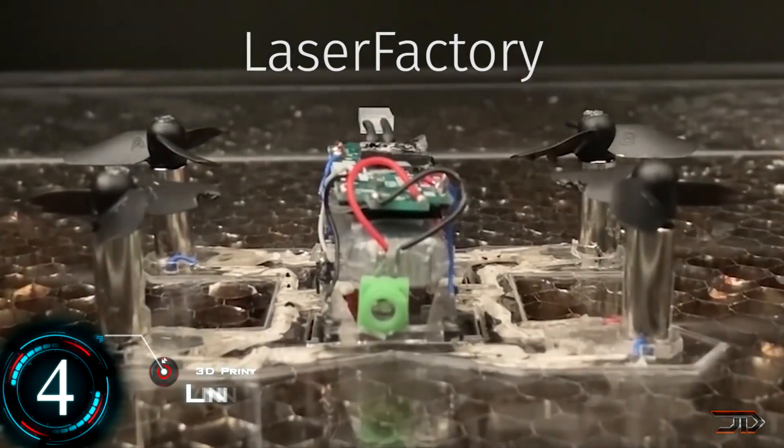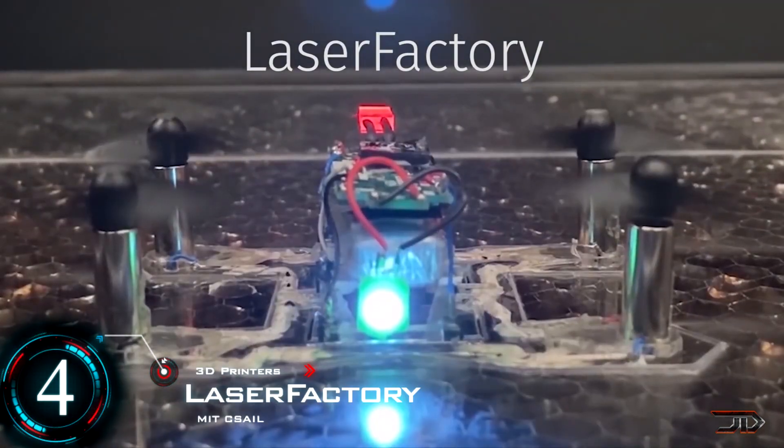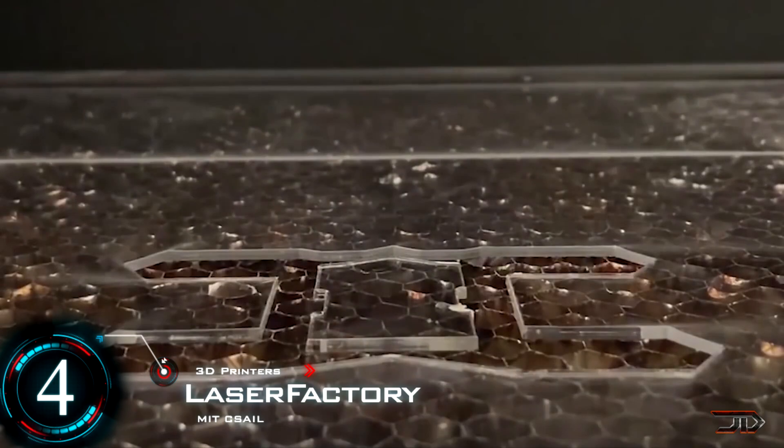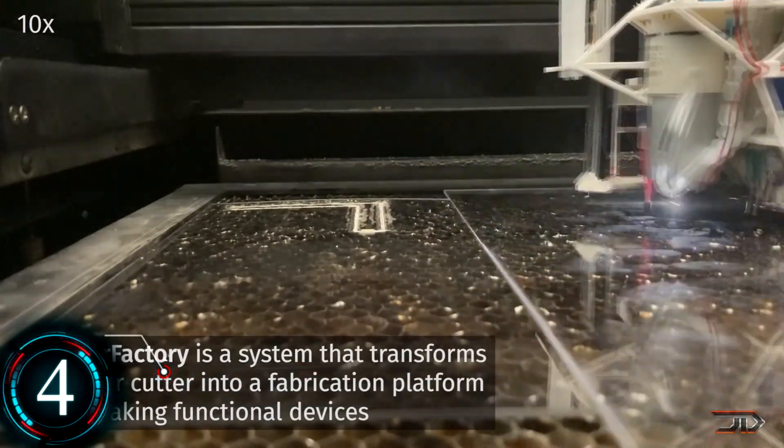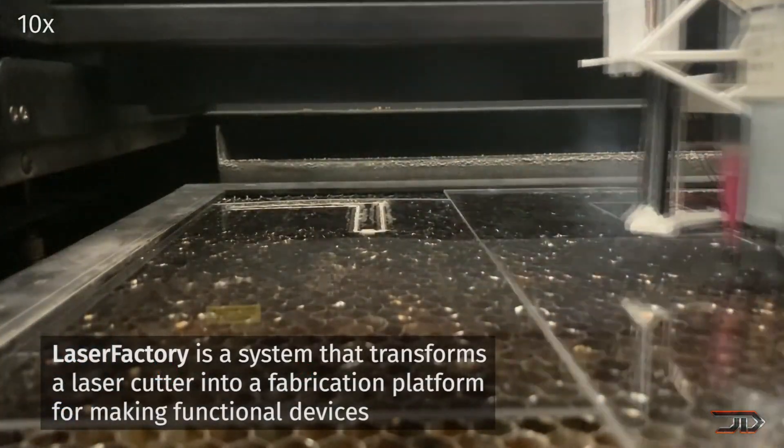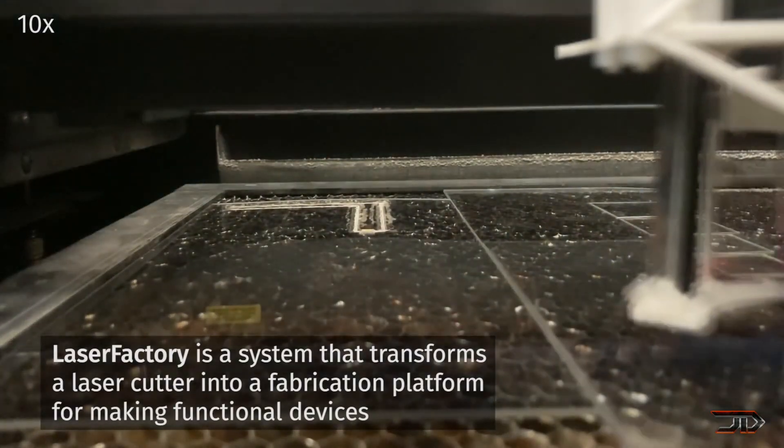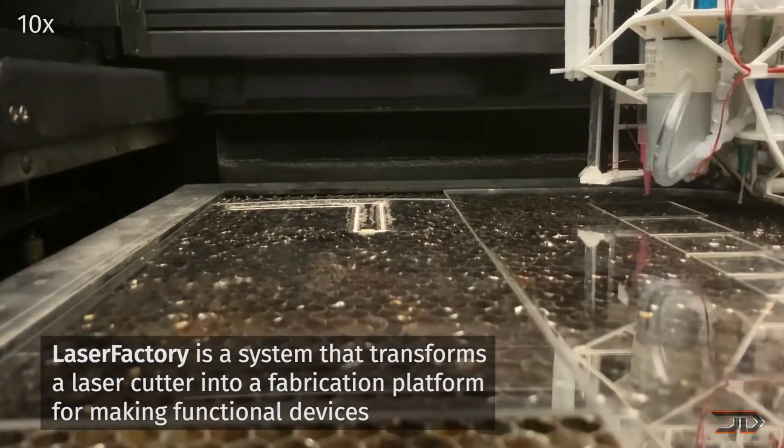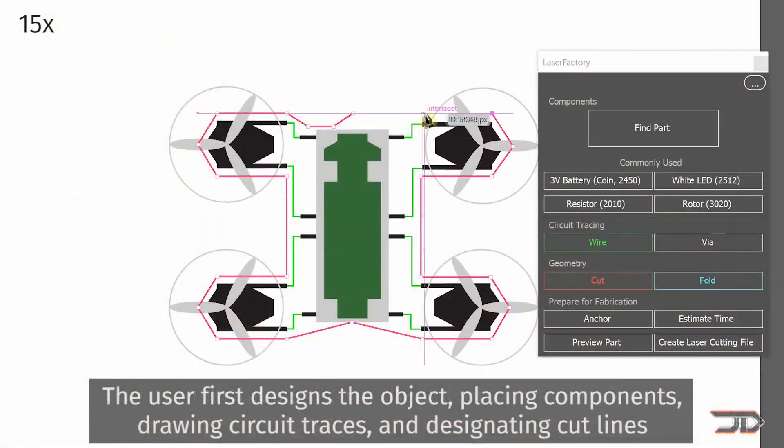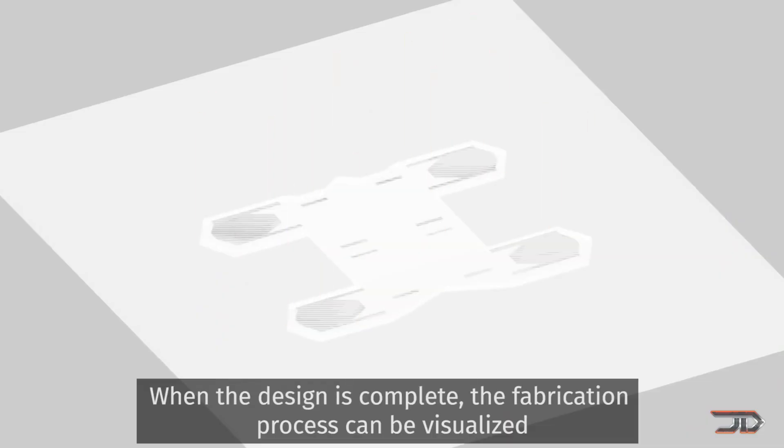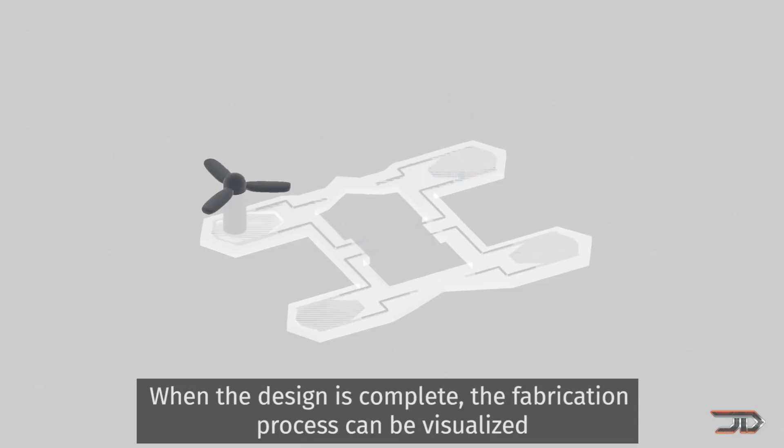At number four, we look at a modified laser cutter. Now, this latest device from MIT SAIL is a multifunctional fabricator which can build ready-to-fly drones from the ground up. It can do this by using a laser cutter, a gripper tool, and a conductive paste dispenser. The user can customize the object, place components, and draw circuits all within this laser factory program.